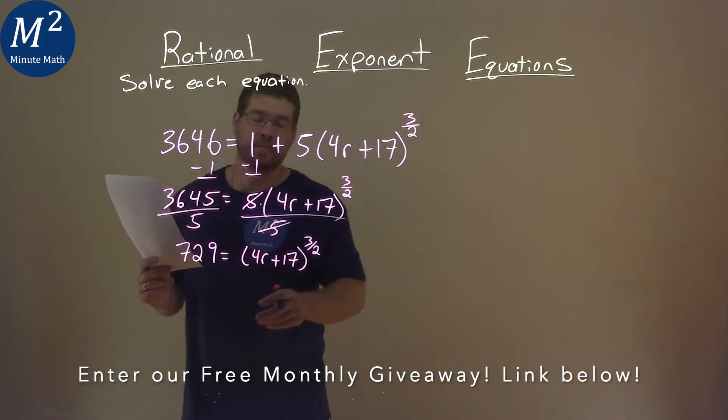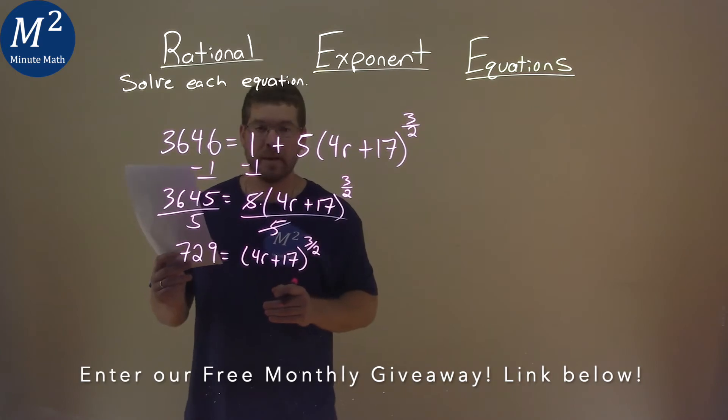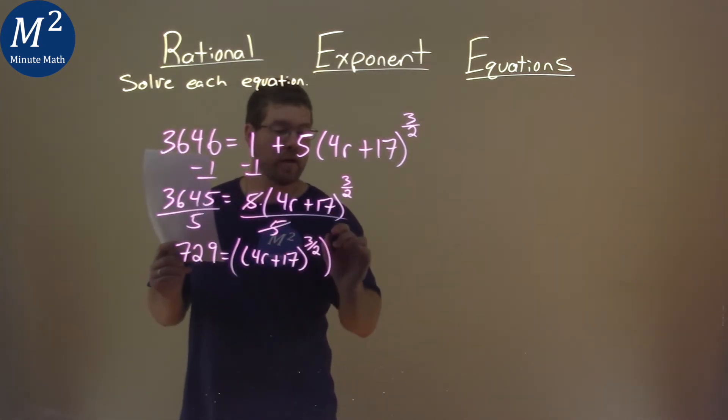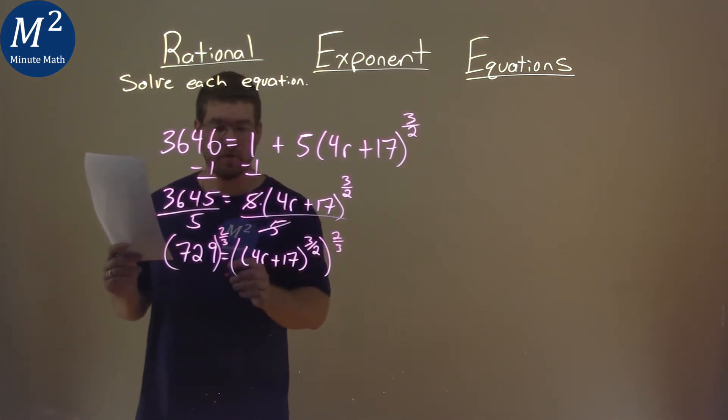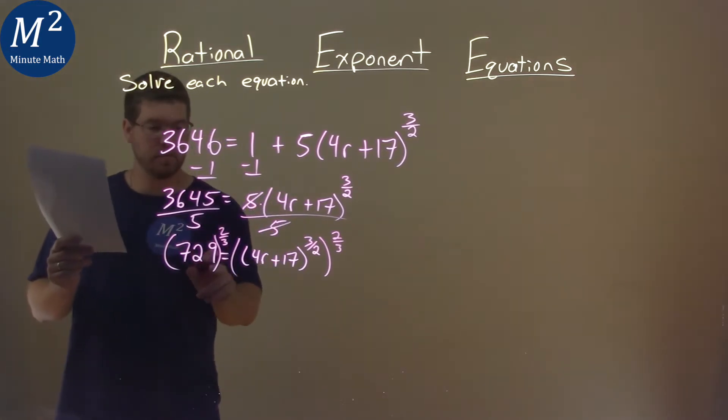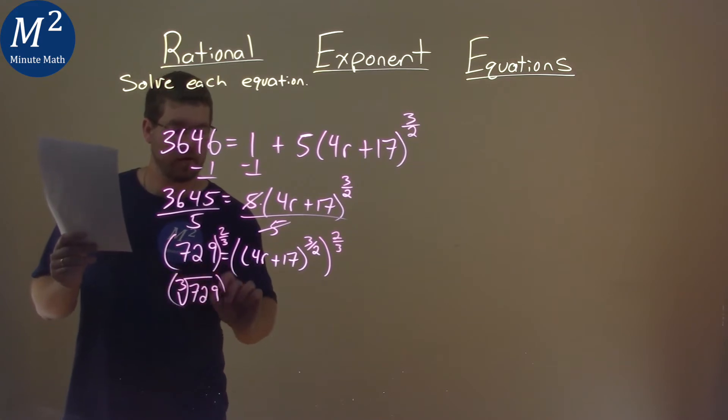So now from here, we have a 3 halves power right there. To get rid of that exponent, we're going to raise both sides to a 2 thirds power. By raising both sides to the 2 thirds power, the left hand side, the 2 thirds, is the same thing as the third root of 729, all squared.